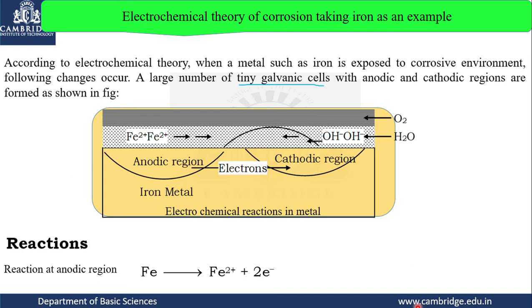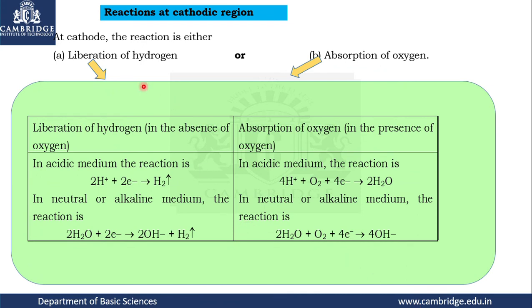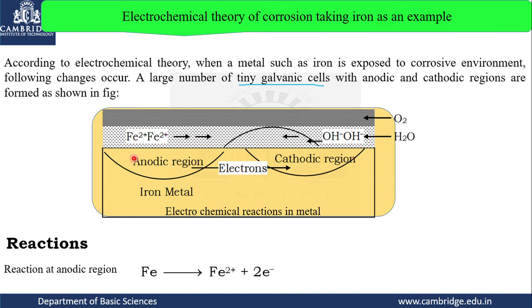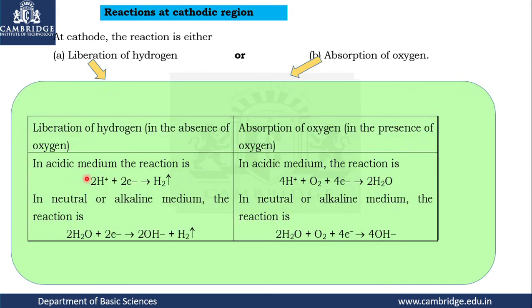Depending on the region, two types of cathodic reactions can occur. The first is called liberation of hydrogen. Irrespective of whether the medium is acidic or neutral, there will be release of hydrogen. If more and more hydrogen is liberating at the cathodic side, it means more metal is getting disrupted at the anodic region. If the cathodic medium is highly acidic, the electrons released at the anode are taken up and hydrogen gas is produced. If the medium is neutral, electrons at the cathodic side combine to produce OH⁻ ions and again release hydrogen gas.